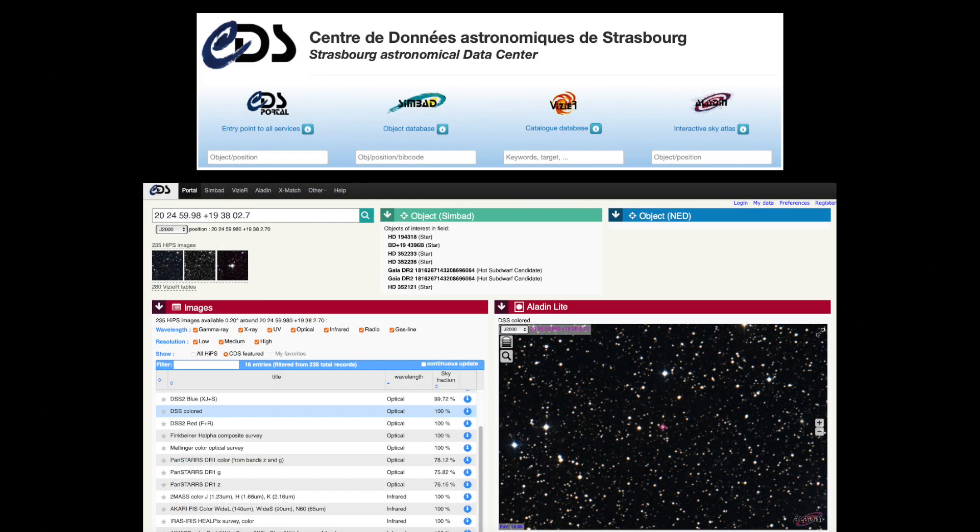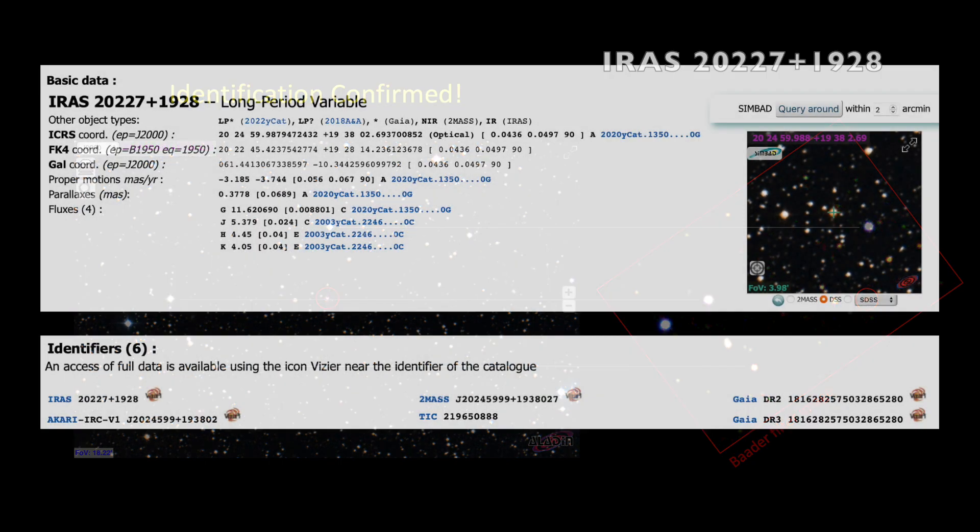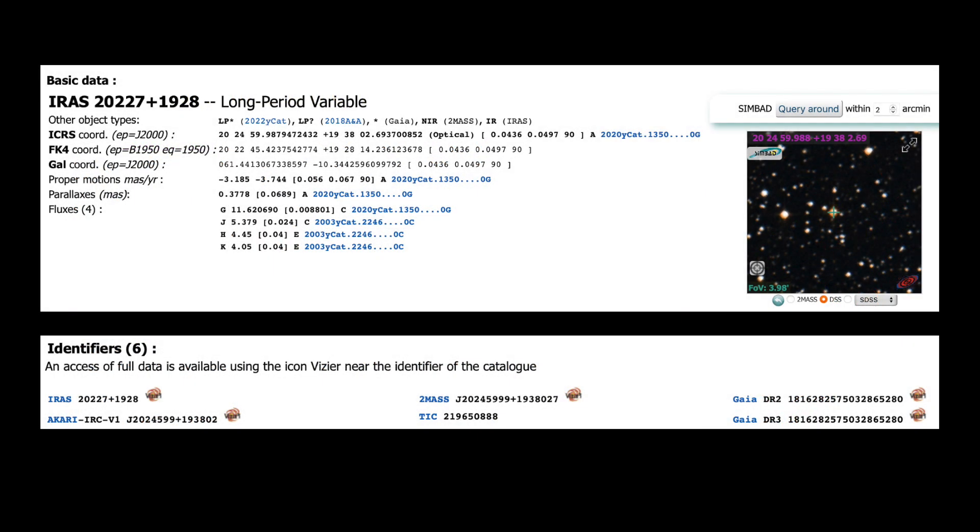Actually, I did this one more time with the Strasbourg Astronomical Data Center in France just to get a secondary confirmation. I used the same J2000 coordinates, I extracted another database photograph, I matched and aligned it with my image, and I again got a confirmation on the exact same object. It was designated as IRAS 20227 plus 1928. And also here on this data page, it specifically says a long period variable star.